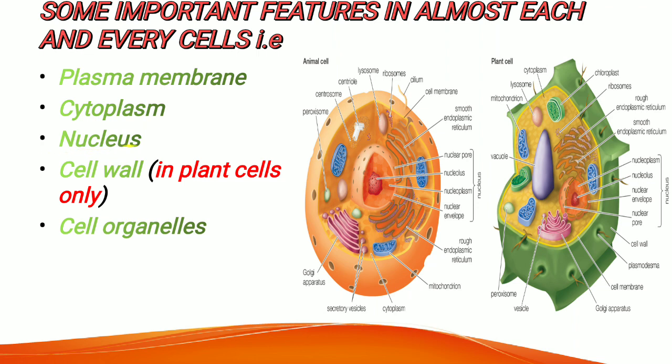The nucleus is a membrane-bound organelle which is spherical in shape and present in both plant and animal cells. It contains the genetic material, that is DNA, of eukaryotic organisms. It is the main component of each and every cell, which is why it is called the control room of the cell.